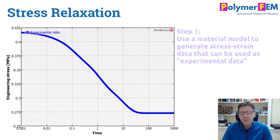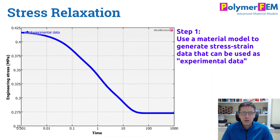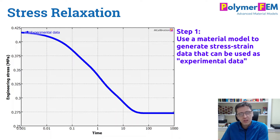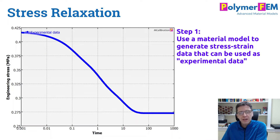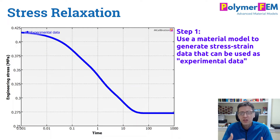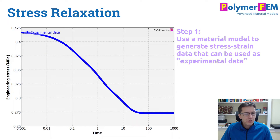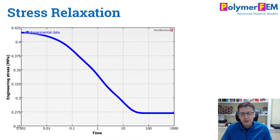So the first step is I'm going to generate the stress relaxation data using MCalibration with a known material model. That is the data I'm then going to go try to fit a material model to. By generating the data in a known way, I can then go back and see if I can recover the original material model that I used to generate it. That's how I'm going to check what is important and what's not important in this case. Let's get started and first generate some relaxation data.